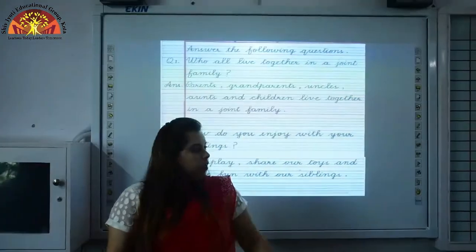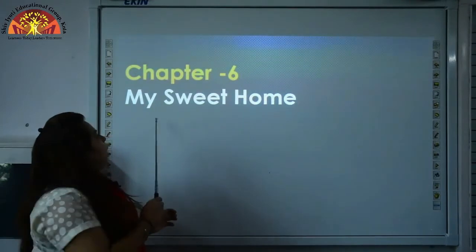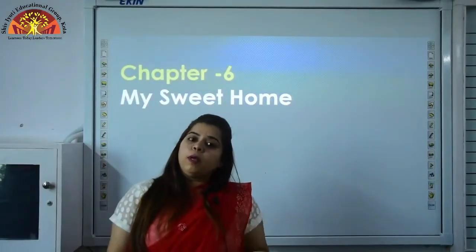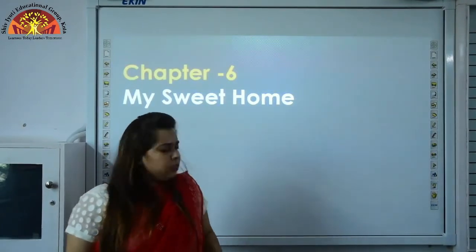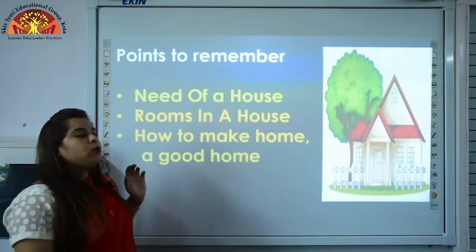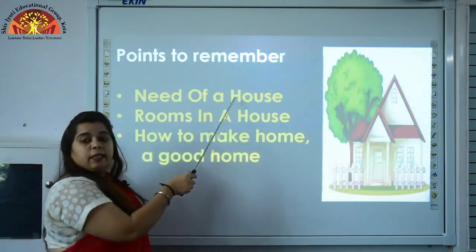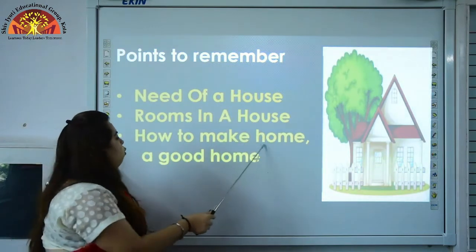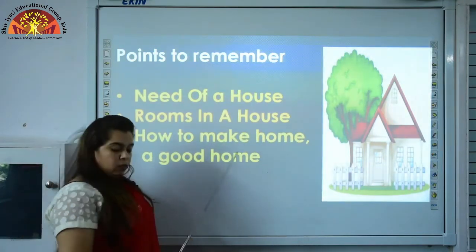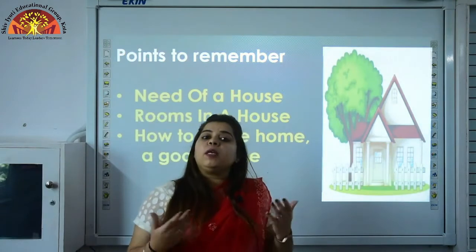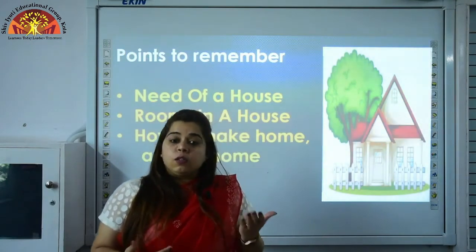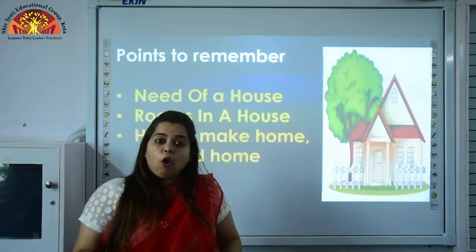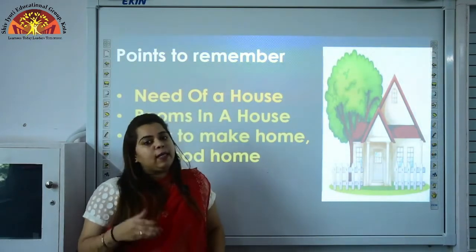Now we will revise chapter number 6, My Sweet Home. Take out your books and open page number 30. In this chapter we are going to revise: why do we need a house, what are the different rooms in a house, and how to make home a good home. Every living being needs a house because it gives us shelter from rain, hot sun, robbers and wild animals.